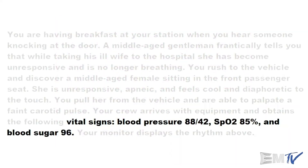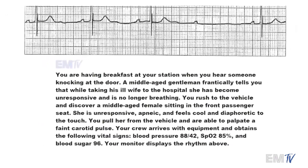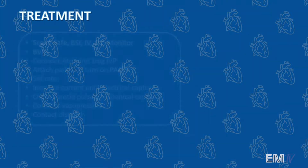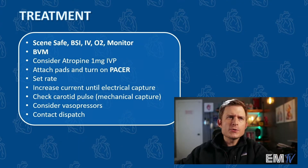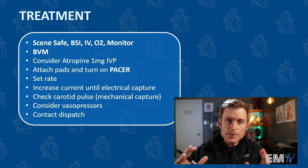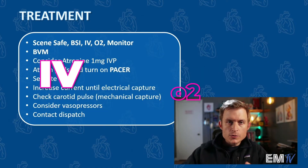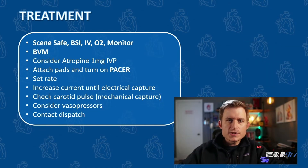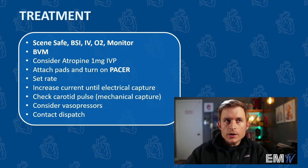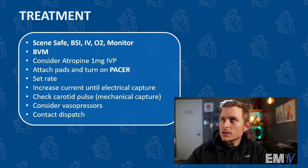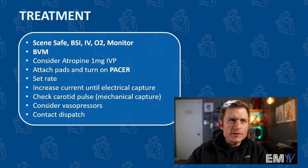Let's move on now to treatment. Just like with all other Static Cardiology cards, treatment here is going to start with the mantra: scene safe, BSI, IV O2 monitor. Because this patient is apneic, we'll then ventilate them with a BVM. They are bradycardic, so technically we're going to consider administering atropine, 1 mg IV push.